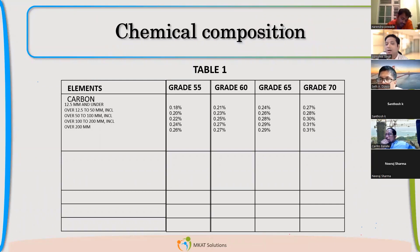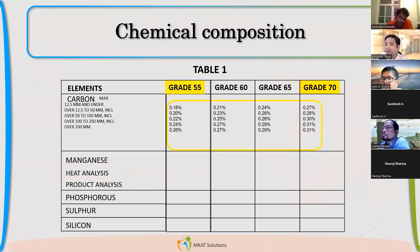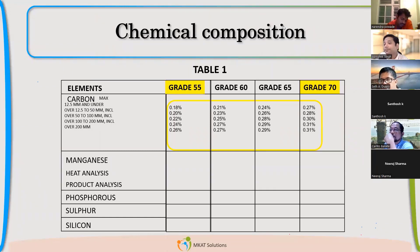You don't have to remember all the values, but just for grade 70 as a reference, you can remember 0.28 and 0.27 as the typical carbon requirement. And note that this is the maximum requirement, not the minimum. So even if the carbon is less, like 0.08, and we have grade 70 meeting the tensile and yield stress requirement, we can accept it. So 0.27 to 0.31 is the normal and maximum — you can have a value below that minimum.